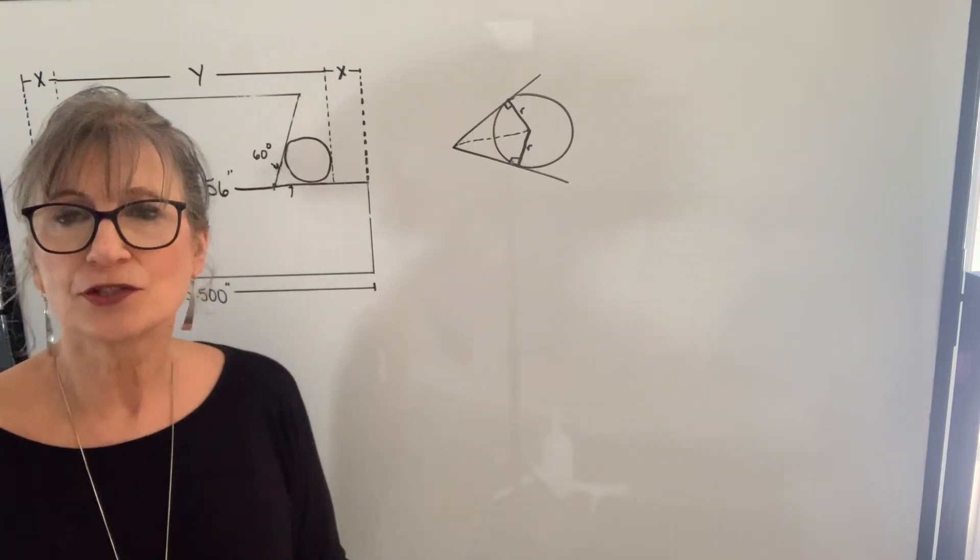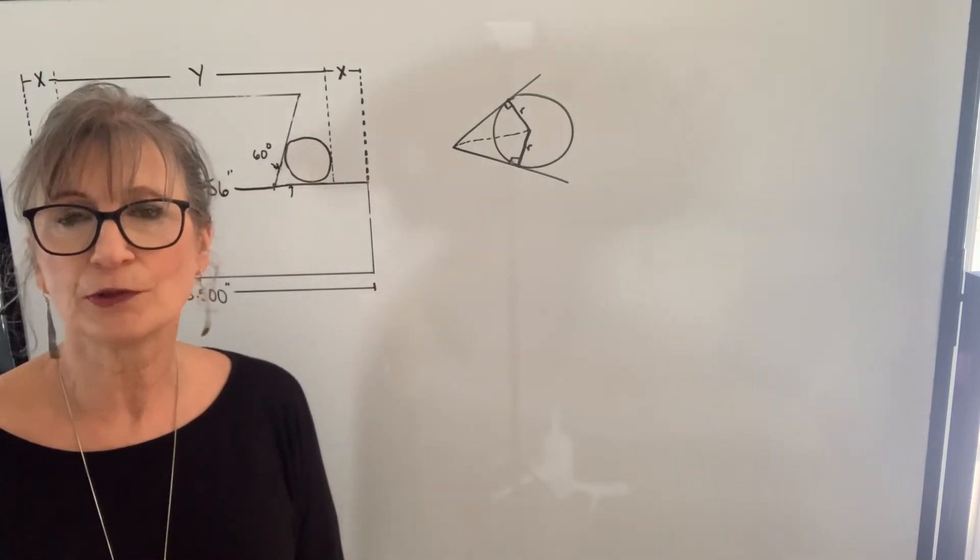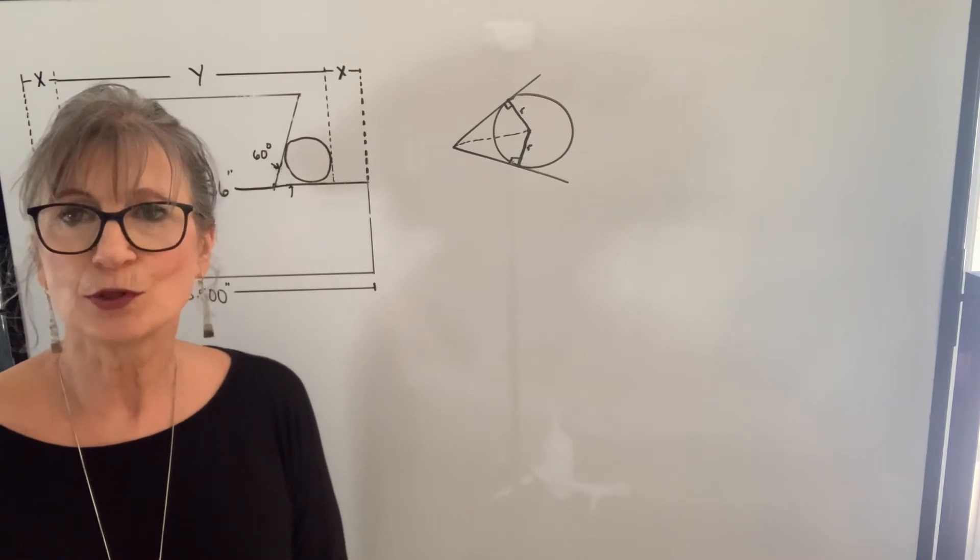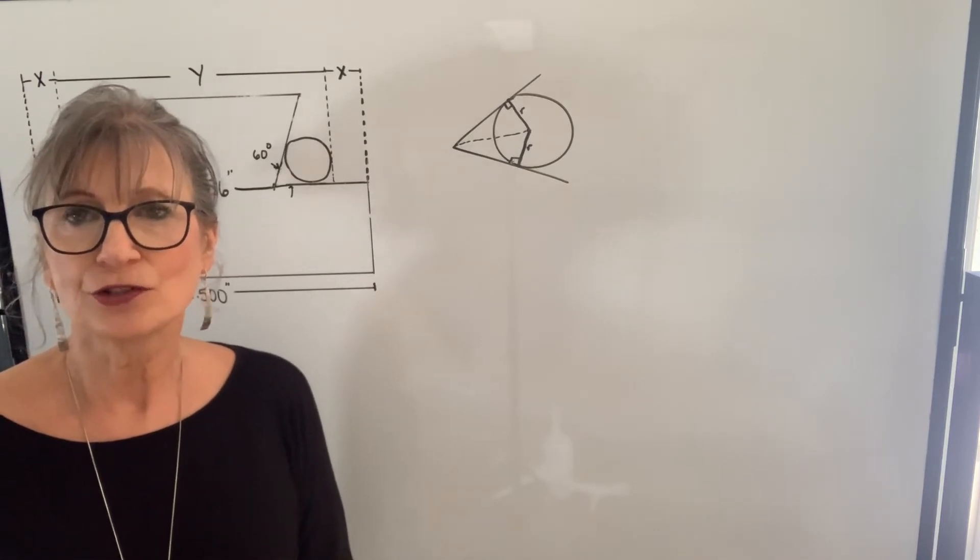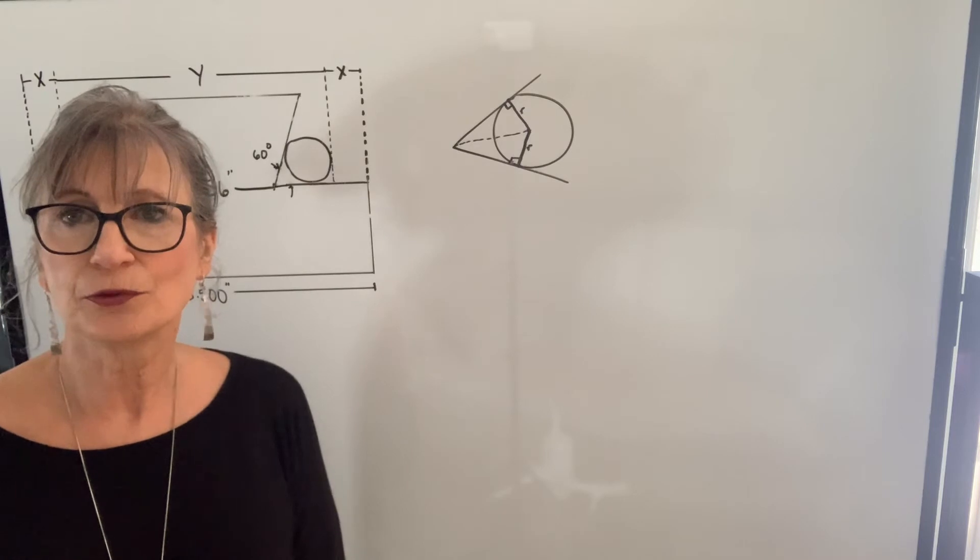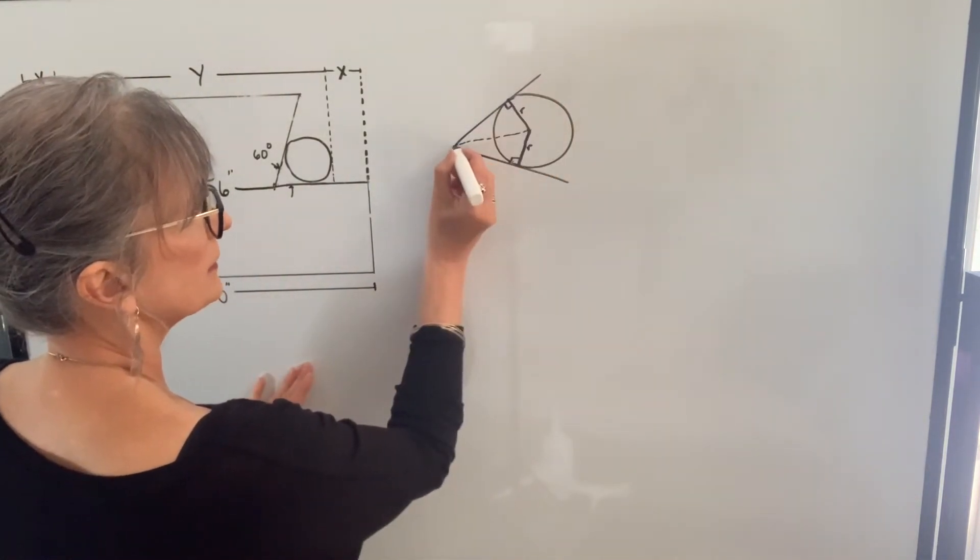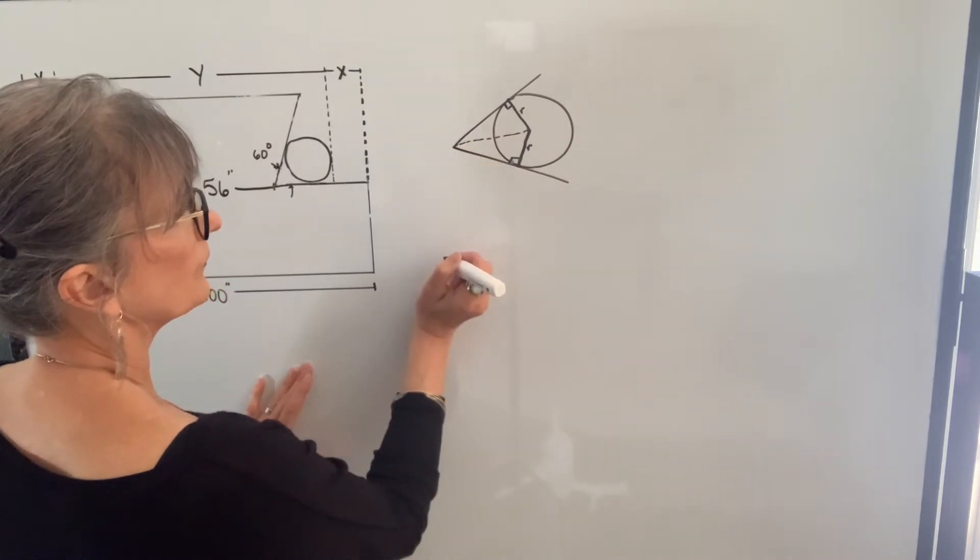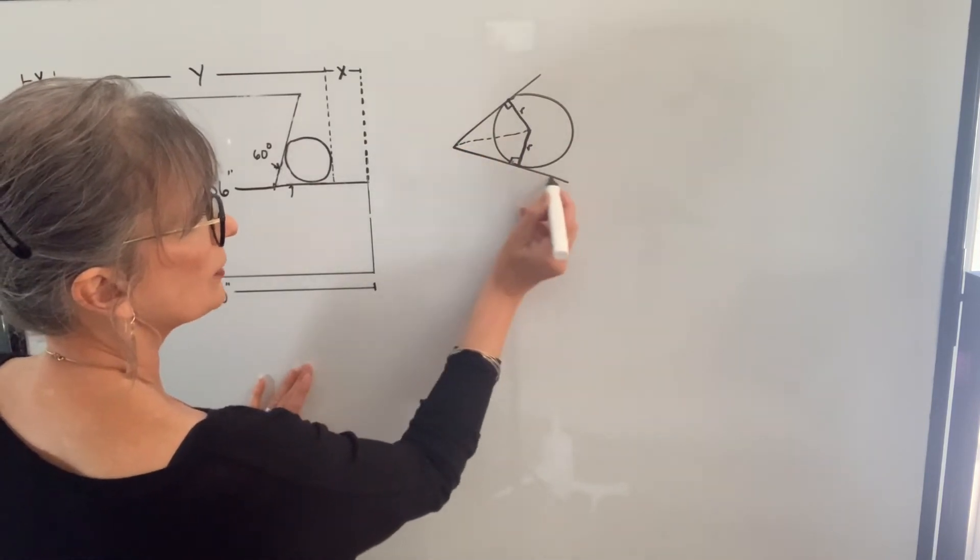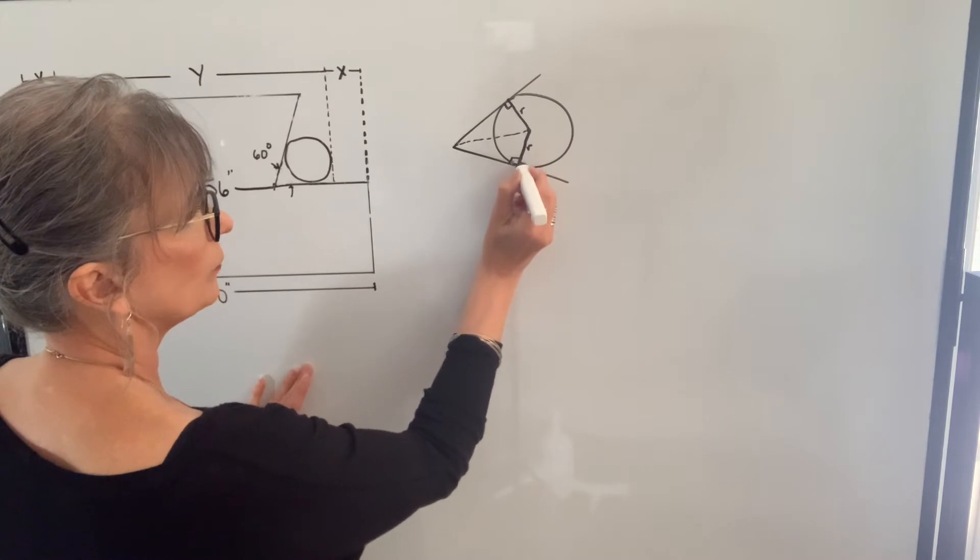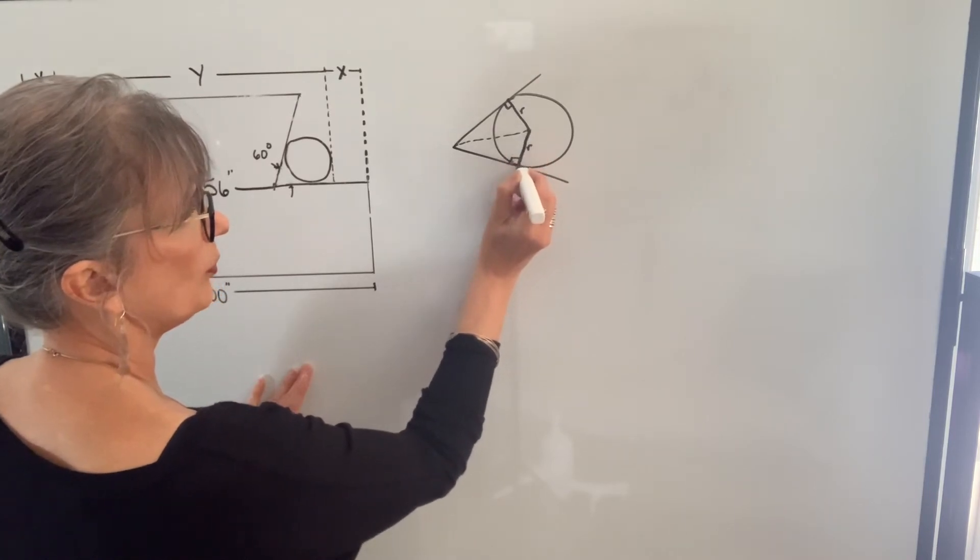Before we start doing the calculations, I just want to talk about a little bit of geometry. In the last video, I talked about a tangent line touching a circle and creating a right angle with the radius. So if we have a circle and we have two tangent lines that intersect at this point, each of those tangent lines will form a right angle with the radius from that point to the center.